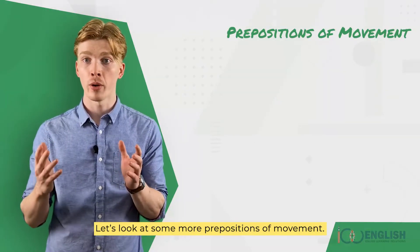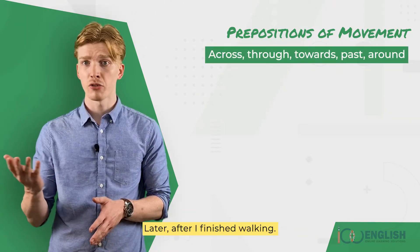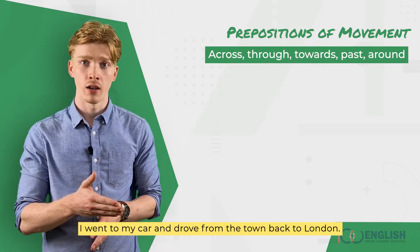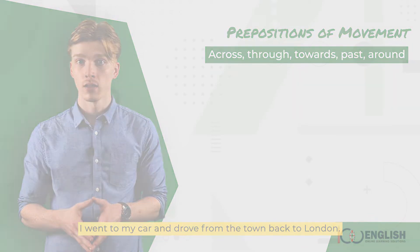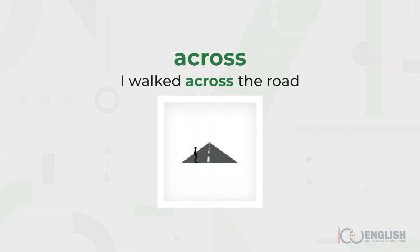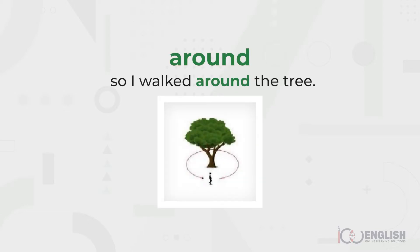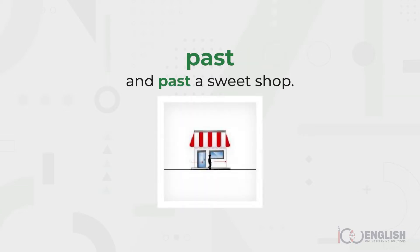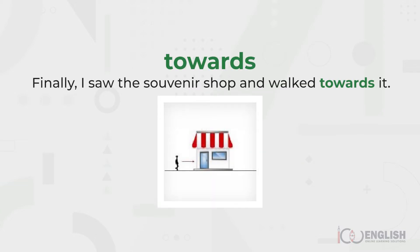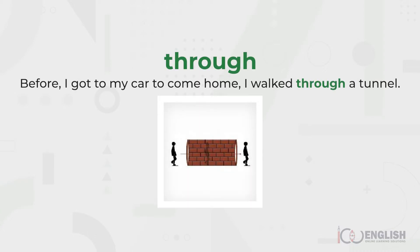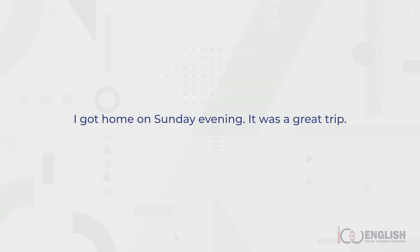Let's look at some more prepositions of movement. Later, after I finished walking, I went to my car and drove from the town back to London. After lunch in the town, I walked across the road. I wanted to buy some local souvenirs, so I walked around the tree and passed a sweet shop. Finally, I saw the souvenir shop and walked towards it. Before I got to my car to come home, I walked through a tunnel. I got home on Sunday evening. It was a great trip.